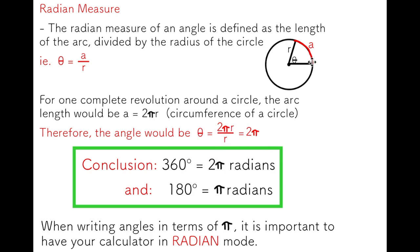That makes sense. If I start at this point, I rotate my terminal arm all the way around the circle, my radius cancels out, and I get 2π.